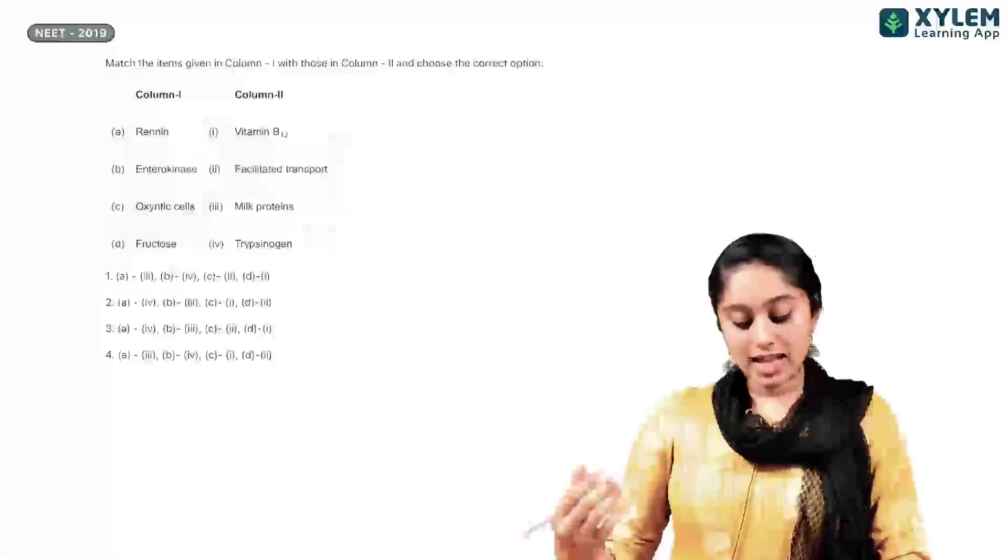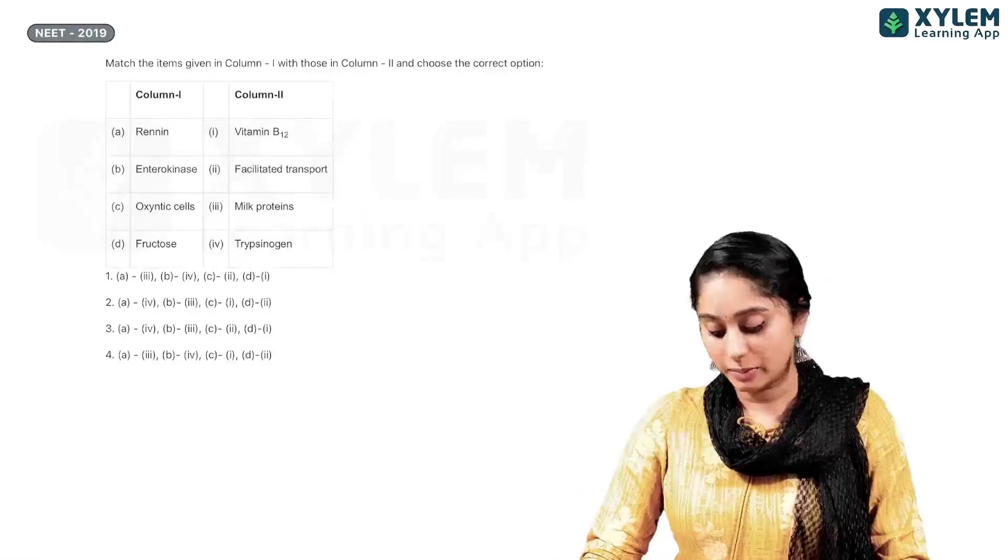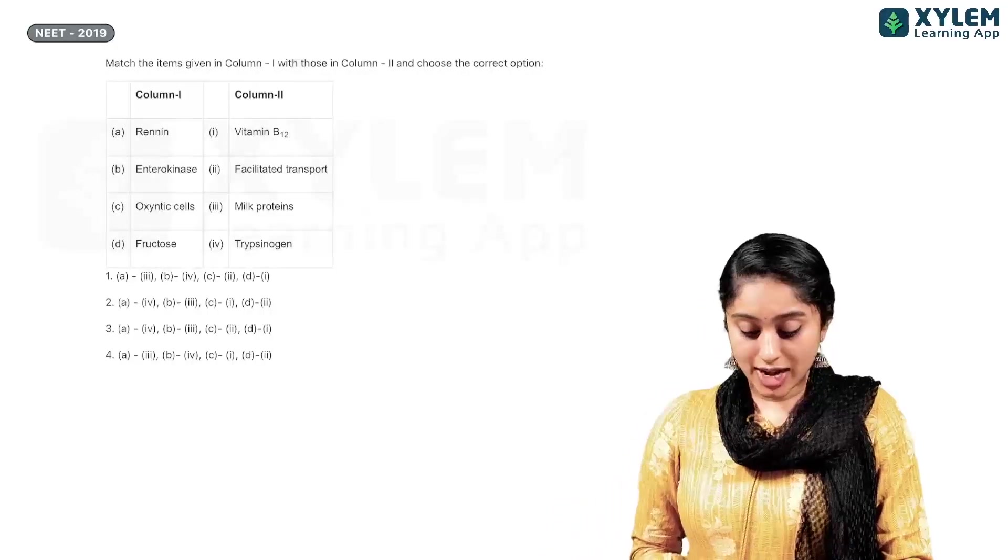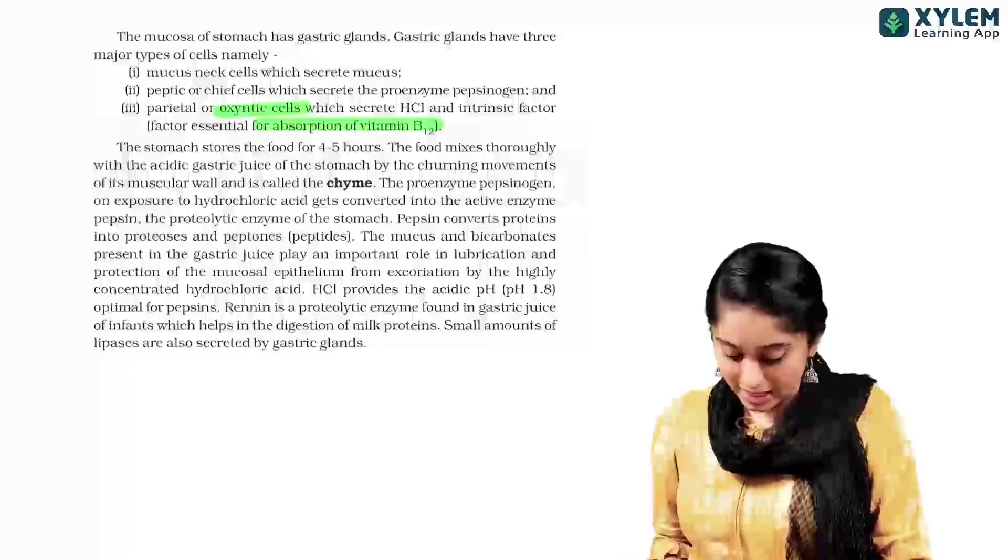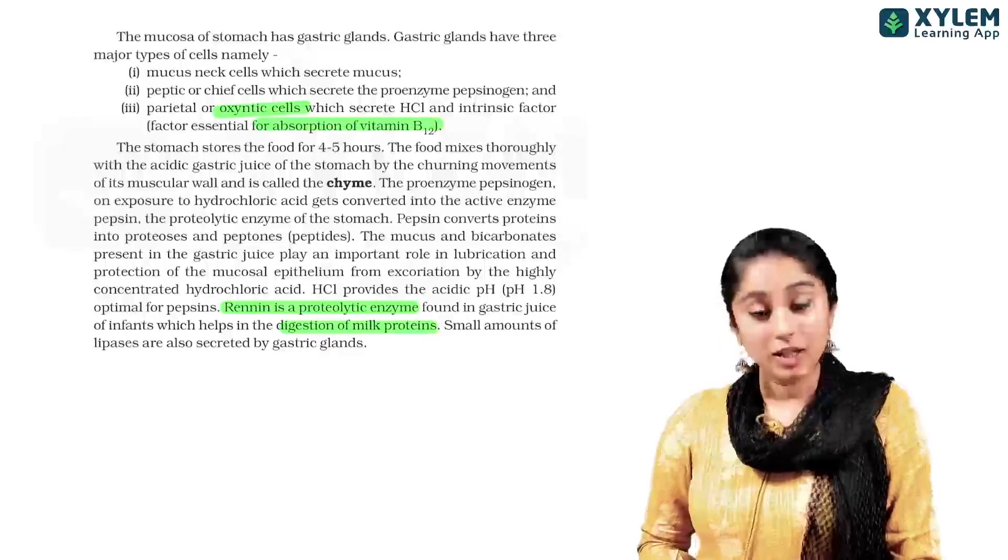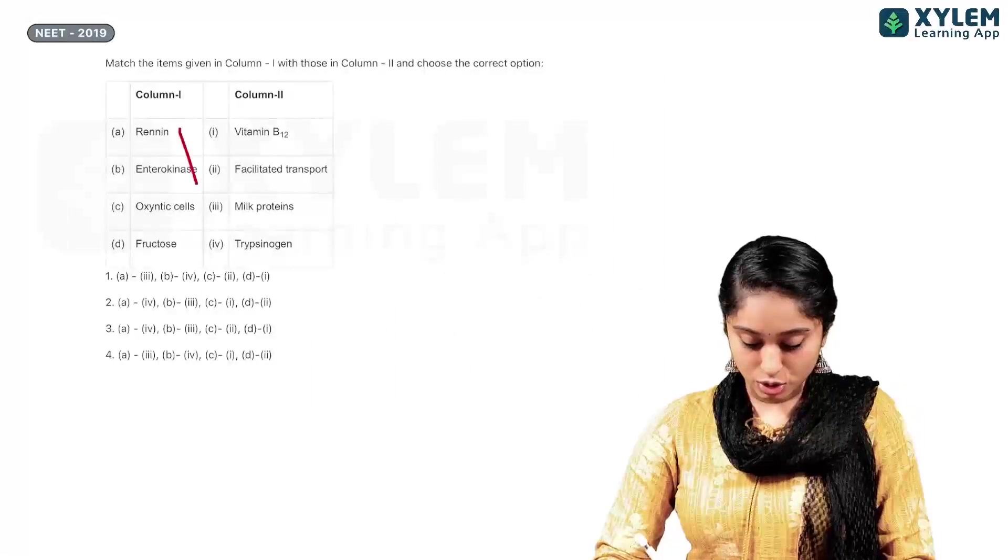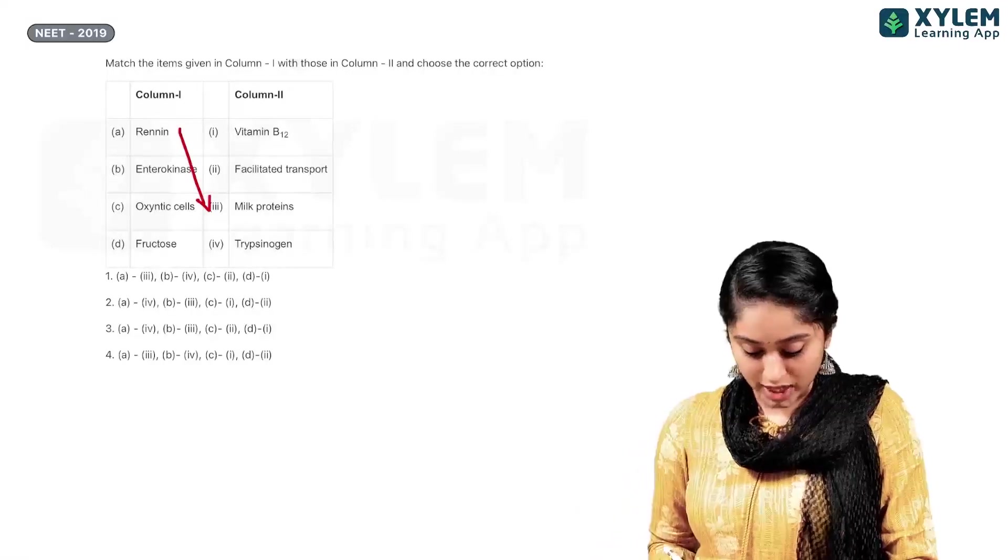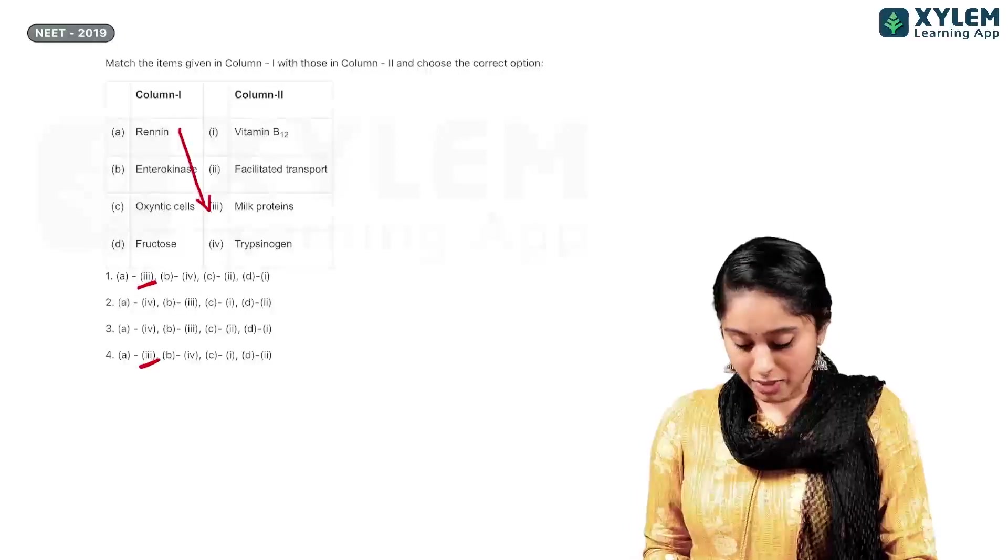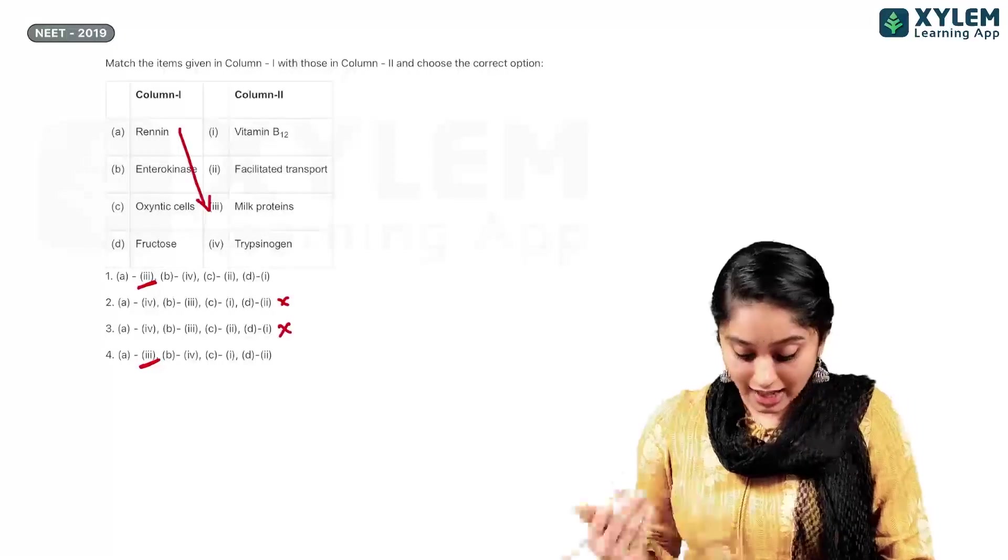Okay. Now, the next question here is again, a match the following question. NEET 2019. A to 3. Here, first, they are asking you to map rennin. Okay. So, rennin is a proteolytic enzyme which helps in digestion of milk proteins. So, clearly, I will map rennin to number 3 milk proteins. Now, if you look at this, A to 3. There are two options. So, that means, my second and third option can be eliminated.